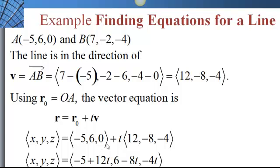Adding those together using the distributive property, we get: x = −5 + 12t, y = 6 − 8t, and z = −4t. This can also be written as (−5 + 12t)i + (6 − 8t)j + (−4t)k. The parametric equations are: x = −5 + 12t, y = 6 − 8t, and z = −4t.